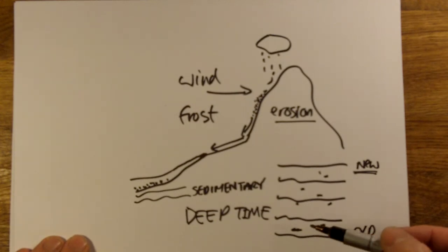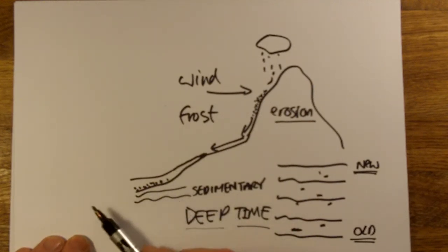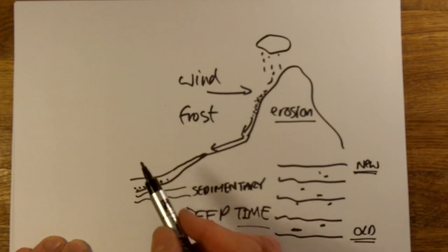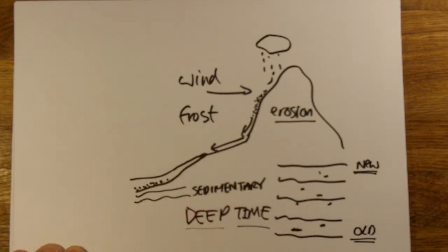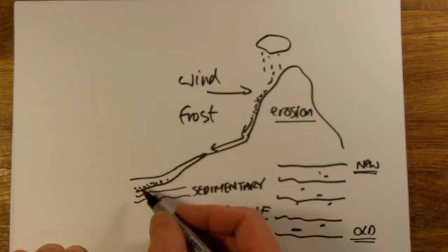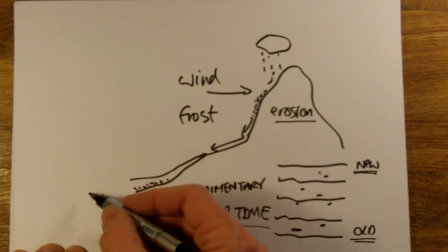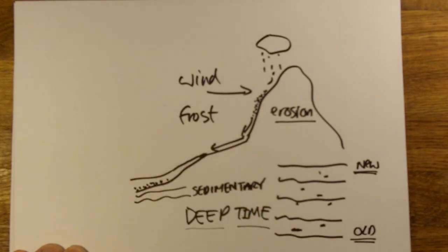These ideas from Hutton became known as deep time, and this idea of the rock cycle is now very well established. Sedimentary rock can be heated under the Earth to make metamorphic rock, or that rock can become liquefied and be spewed out of a volcano to become igneous rock.